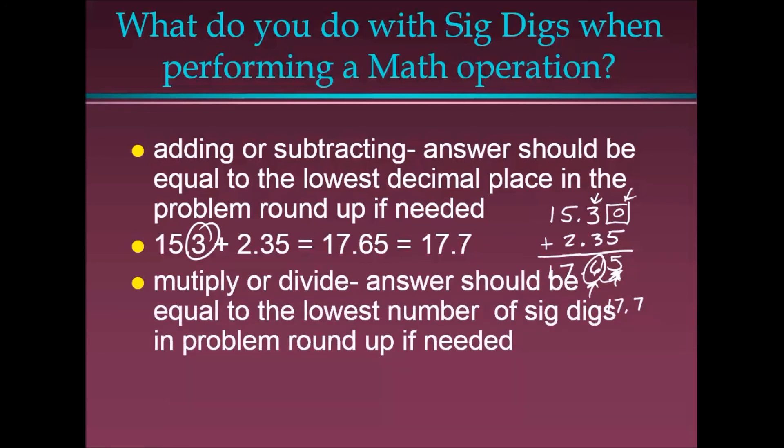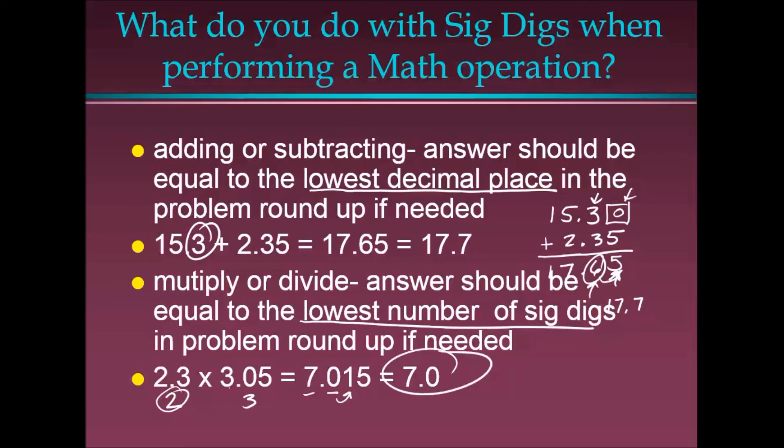What about if you're multiplying or dividing? The concept is there, but what you do is a little different. Here, if you're adding and subtracting, you went with the lowest decimal place. If you're multiplying or dividing, you go with the lowest number of significant digits. Don't quite know why, but it is what they do. So, here, 2.3, two significant digits. 3.05, three significant digits. 7.015 is what the calculator will tell you. Never, never, never, never, never believe the calculator. The calculator doesn't care about significant digits. Ignore the calculator. Go back. Two significant digits. Your final answer should be in two significant digits. Look to the number on the right. That number is below four. Four or below. So, round down. 7.0 is your final answer.